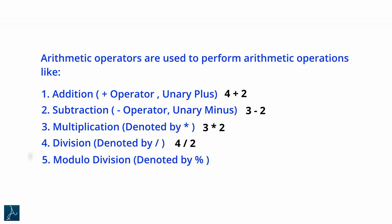The modulo division operator, denoted by percent sign, is used to find the remainder of a division operation. For example, 5% 2 returns the remainder of 5 divided by 2, which is value 1.